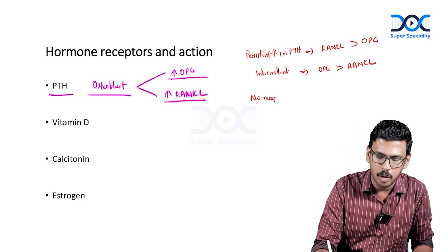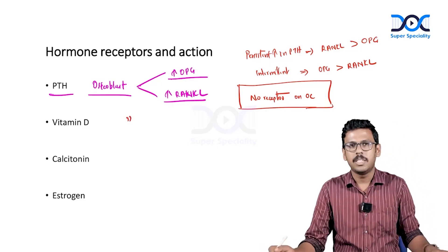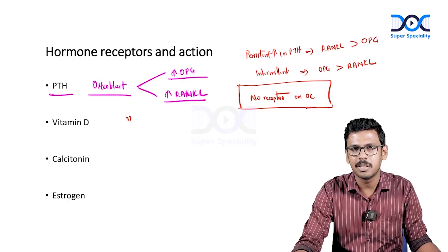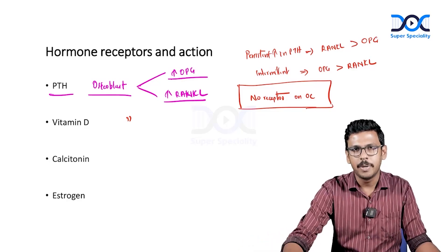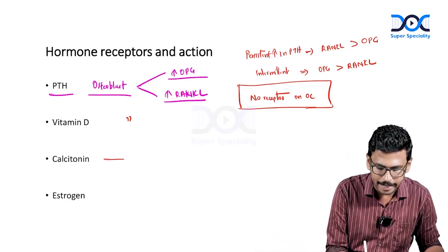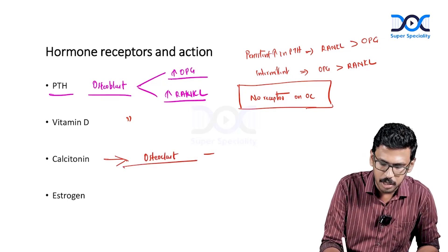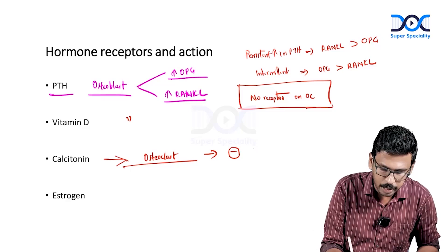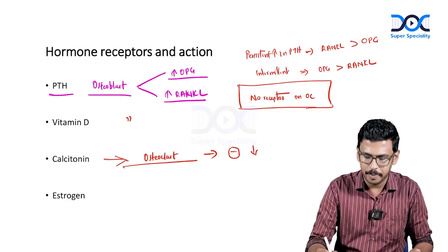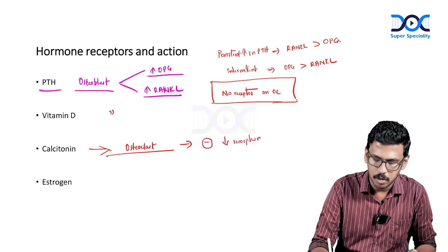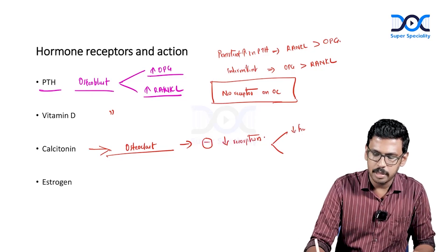PTH has no receptors on osteoclasts — this is important. The same applies for vitamin D. Both vitamin D and PTH have receptors on osteoblasts, and indirectly regulate osteoclast action by modulating osteoprotegerin and RANK ligand levels. Calcitonin has receptors exclusively on osteoclasts and exerts a negative action on them, reducing bone resorption.